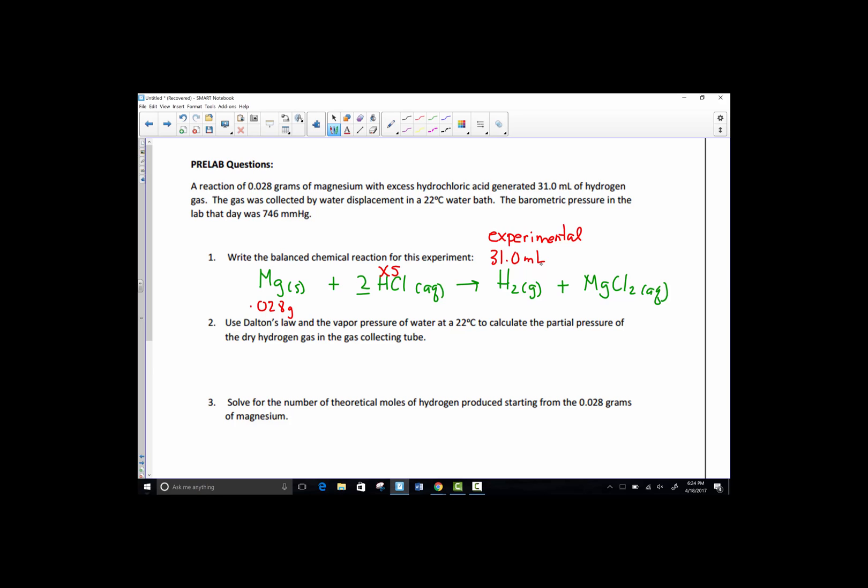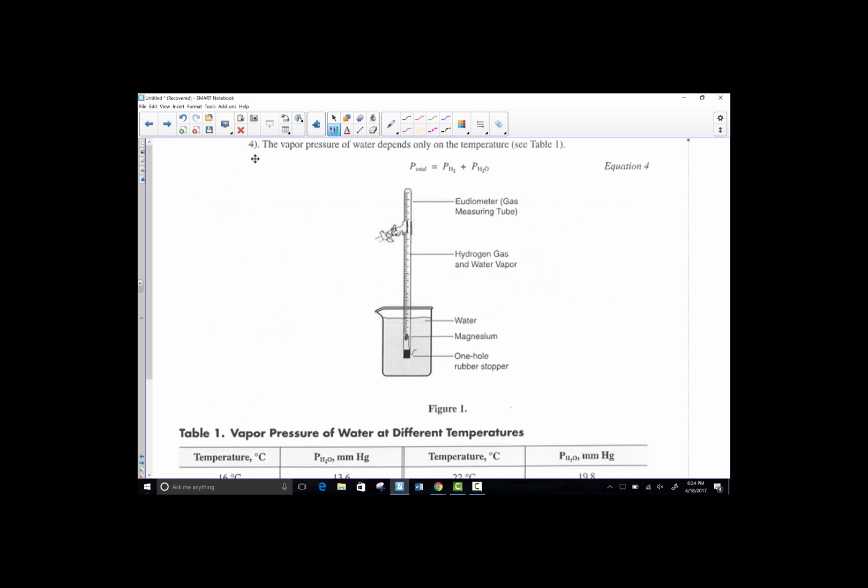All righty. The gas was collected by water displacement in 22 degrees. So let's talk about that a little bit, and that will lead us into Dalton's Law of Partial Pressure. During your pre-lab reading, you were reading about Dalton's Law here in step four. When we collect a gas by water displacement, we end up with a mixture of two gases. Remember just a moment ago how we said that this was 31 mils? Just reading that like you would a graduated cylinder. 31 mils is the volume of this pocket of gas up here.